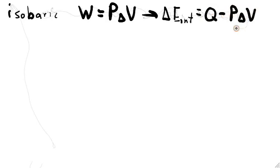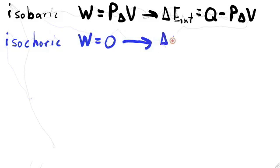In a constant volume process, which is called an isochoric process or isovolumetric process, the work is zero because there's no change in volume. This means that the change in internal energy is entirely Q, just heat flow.